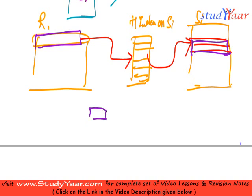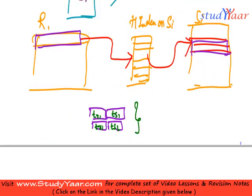So what we get over here is this and this and this and this. Assuming we have two tuples in SI and one tuple in RI which are matching, we have TR1 TS1, TR1 TS2, and that is the result for this particular tuple.